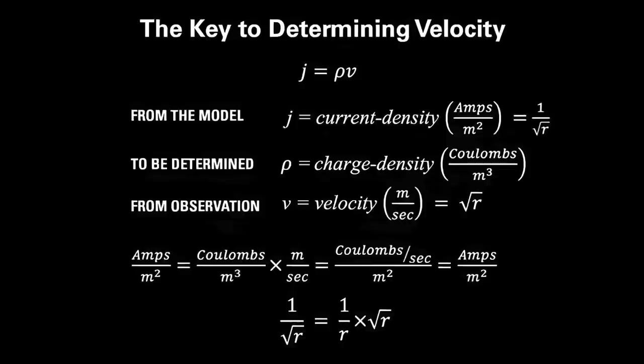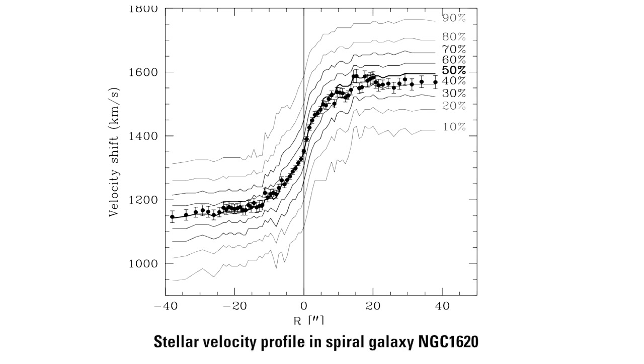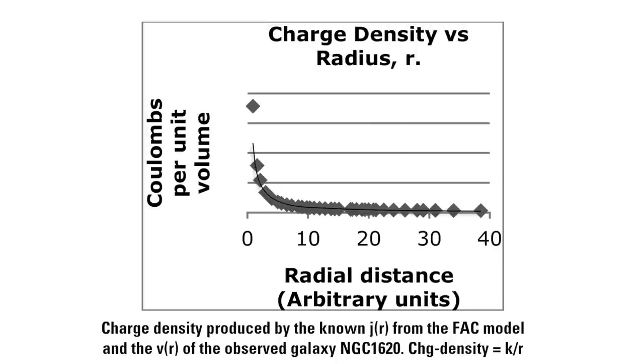So I was able to solve for the third quantity, not very hard: the charge density rho that must exist inside my model BC. Using all this data from galaxy NGC 1620, it turns out to be a simple inverse relationship, one over r.